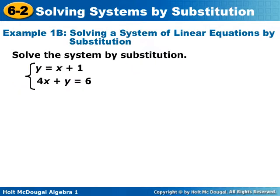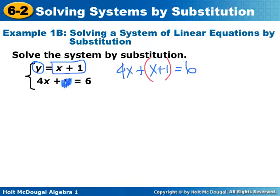So here we have a new problem. We have y already isolated. So that means that we can take this part of the expression and put it in right here for this y. So I'm going to have 4x plus x plus 1 equals 6. I have substituted because this right here used to be y. But since y equals x plus 1, I can switch them out for each other. So I have 5x plus 1 equals 6. 5x equals 5.